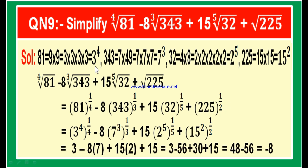Now, 81 is 3 power 4 whole power 1 by 4; minus 8 into 343 is 7 cubed to the power 1 by 3; plus 15 into 32 is 2 power 5 whole power 1 by 5; plus 225 is 15 squared to the power 1 by 2. The 4 and 4 cancel giving 3; the 3 and 3 cancel giving 7; the 5 and 5 cancel giving 2; and the 2 and 2 cancel giving 15.